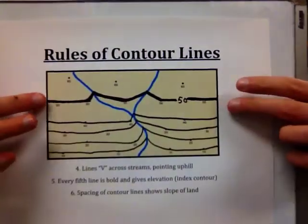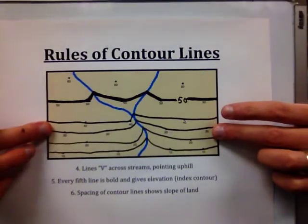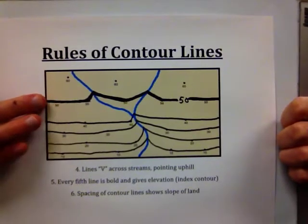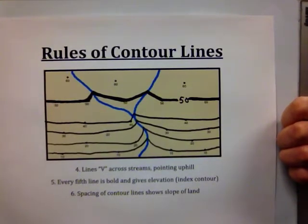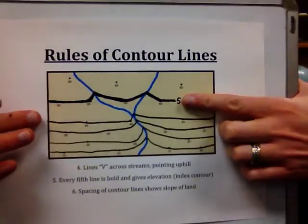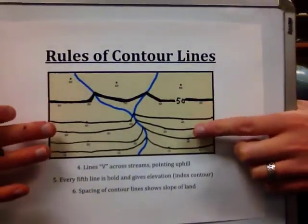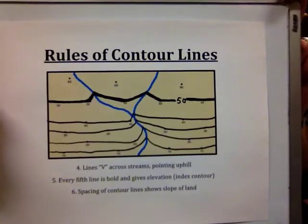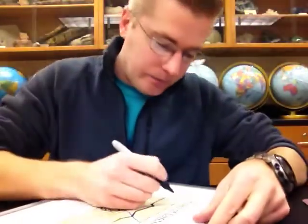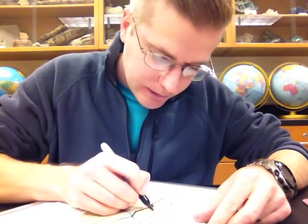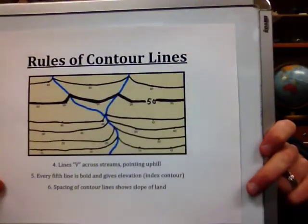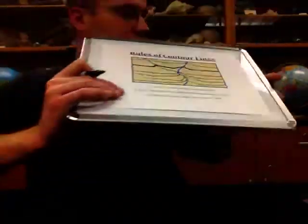Here you can see the index contour — the line is thicker and more bold than the others, and we've written the number on it. When looking at a map with many contour lines, the index contours really help you see changes in elevation and the actual numbers, because typically it's just the line without points along it. I'll draw the last line for 60 — it's thinner because it's not an index contour line. It V's when it crosses the stream, helping us see changes in elevation along the land surface.